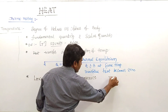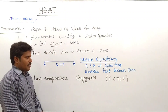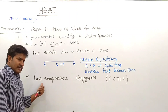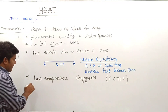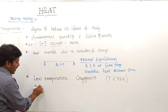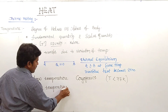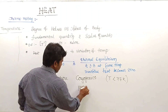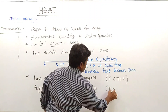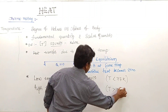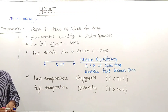The study of low temperature (below 77 Kelvin) is called cryogenics. The study of high temperature (more than 1000 Kelvin) is called pyrometry.